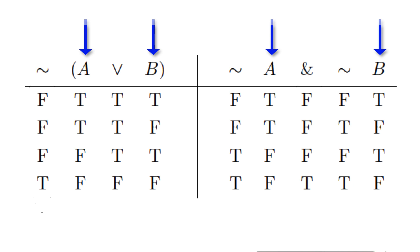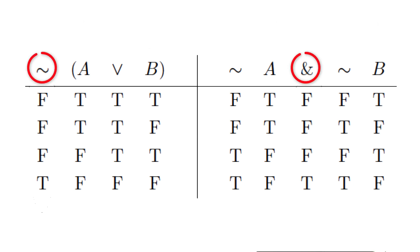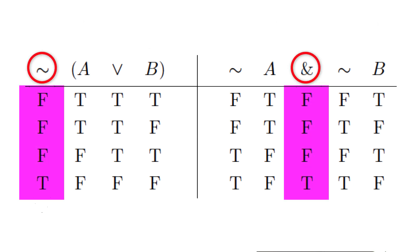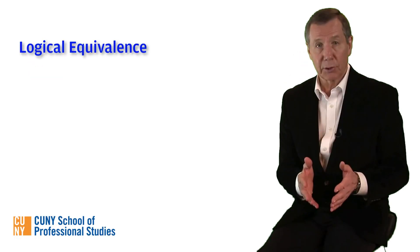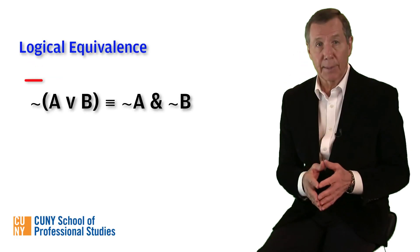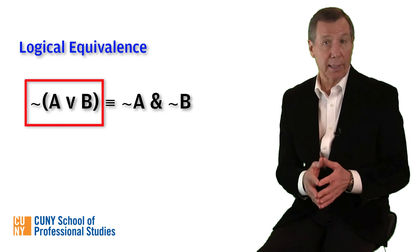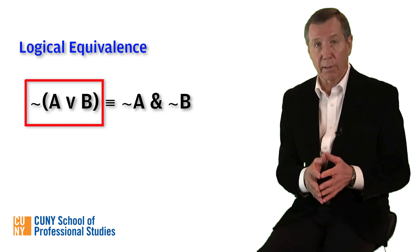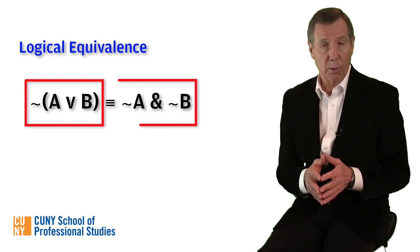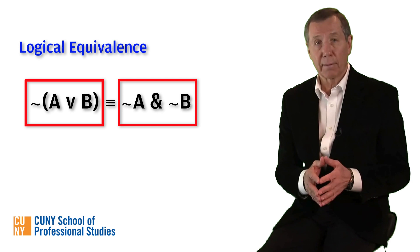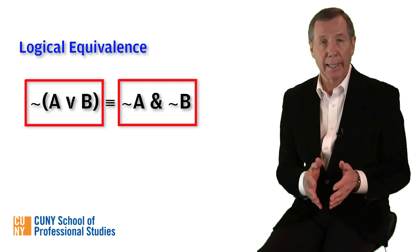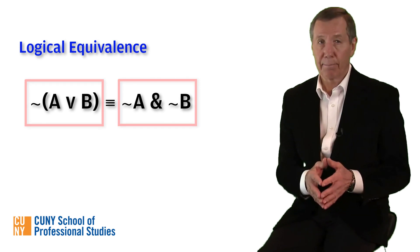As you can see, the truth value arrays for the main connectives are identical. So, whenever we encounter the negation of a disjunction — as in, it is not the case that either A or B — we can immediately infer, via DeMorgan, that therefore both not A and not B.